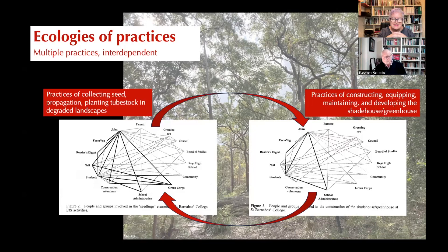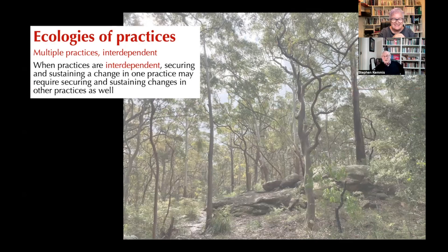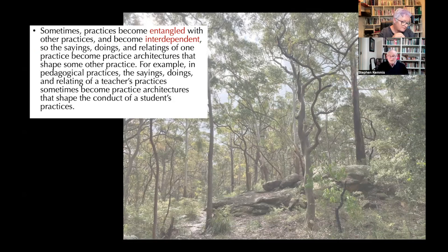It's the practices that are linking those people, not just the people. When practices are interdependent, if you're changing one, you might have to change others, because they're linked in these ecologies. Sometimes practices become entangled with other practices and become interdependent — not always, just sometimes. It's an empirical matter whether they do or don't, so it's a question for research to work out which practices actually depend on which others. They could just coexist in the same practice landscape without having any close interconnections.